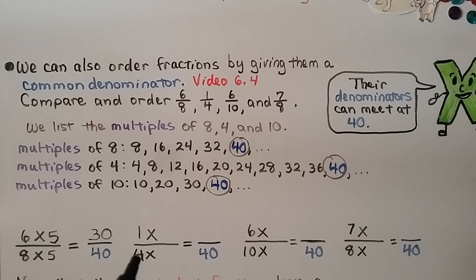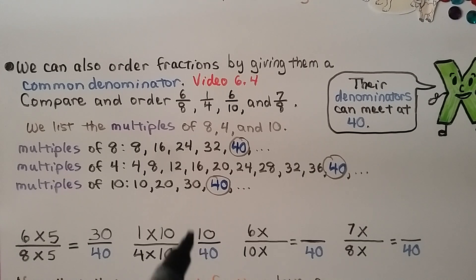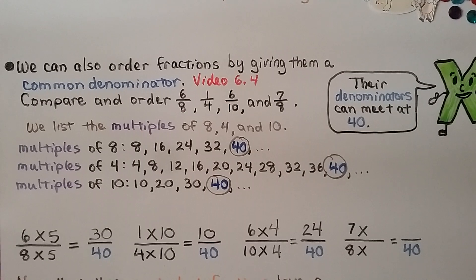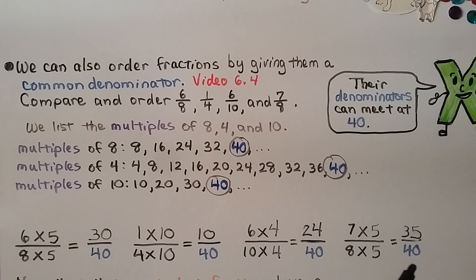Notice that ten-fortieths looks like one-fourth but with a zero added to each part. For six-tenths: ten times four is 40, so six is multiplied by four — six-tenths becomes twenty-four-fortieths. For seven-eighths: eight times five is 40, so seven is multiplied by five — seven-eighths becomes thirty-five-fortieths.